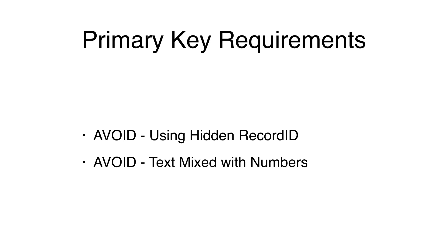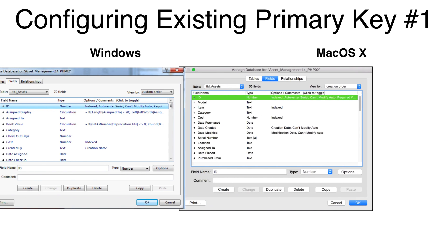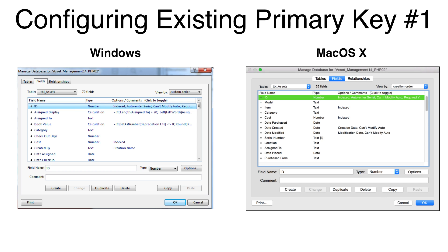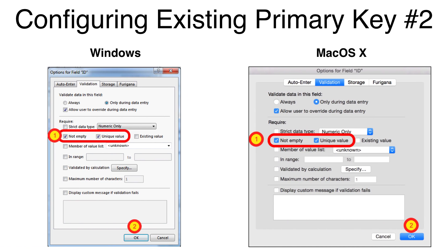Use it only for display purposes. If you have an existing primary key field which FMPro Migrator doesn't recognize, then use this procedure. Select the File Manage Database menu. Click on the Tables tab. Double click on the name of a table to see the fields. Double click on the ID field. The Auto Enter tab of the field Options dialog shows that the ID field is an Auto Enter Serial Number field and the next Auto Increment value will be 5. This is perfect for the primary key column. Click on the Validation tab to set the validation settings. Make sure that the Not Empty and Unique Value checkboxes are checked as you see them here. Click the OK button to save the field changes. Then click the OK button on the Manage Database dialog also.